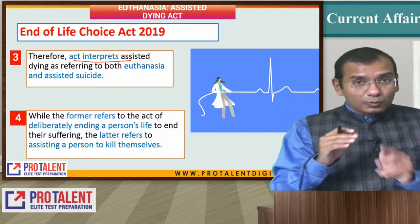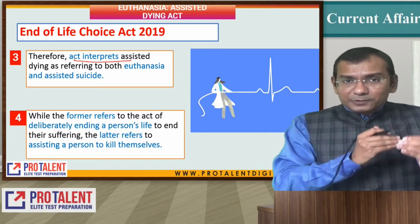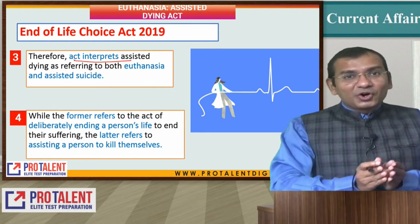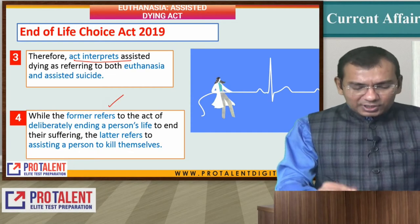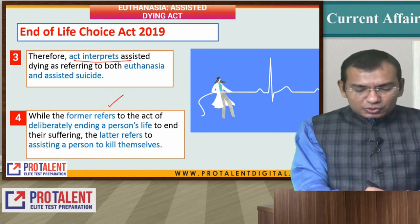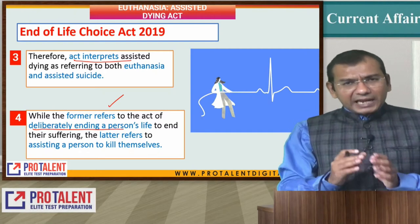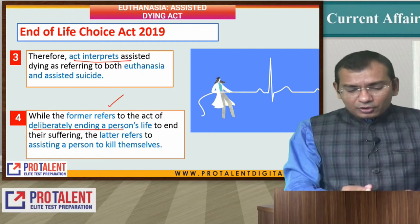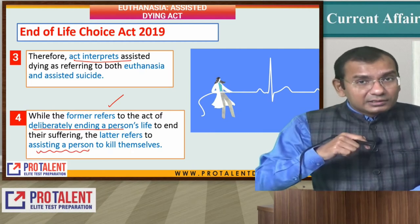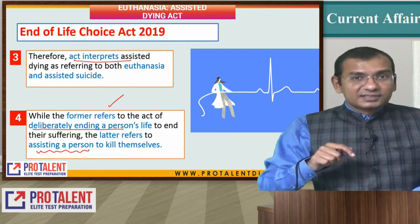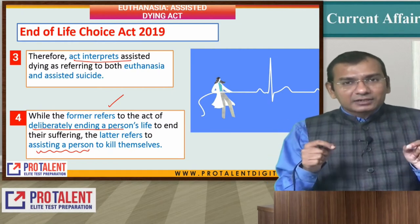One is euthanasia, where a doctor or nurses through medical processes are stopping your life. On the other hand, it is assisted suicide. The former — euthanasia — refers to the act of deliberately ending a person's life, primarily to end suffering. The latter is assisting a person to kill himself or herself. This is the idea of the End of Life Choice Act 2019.